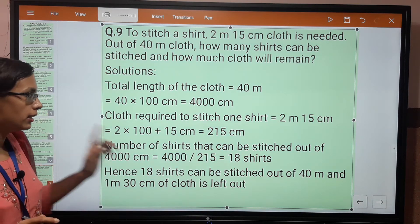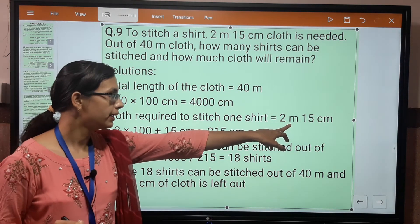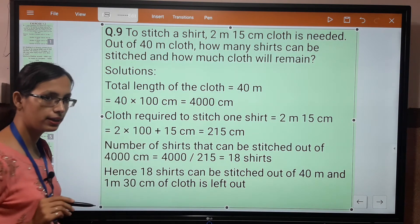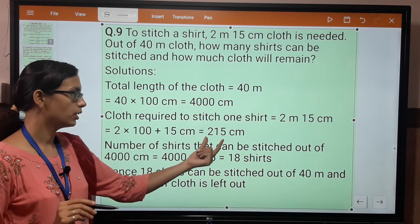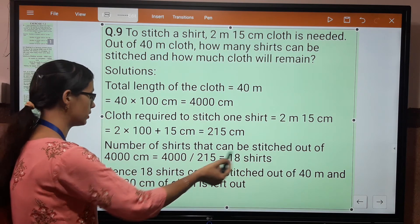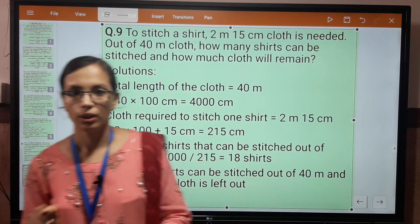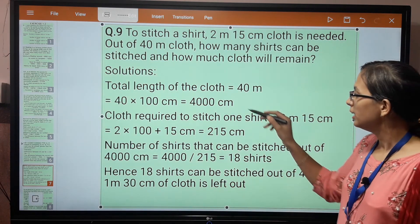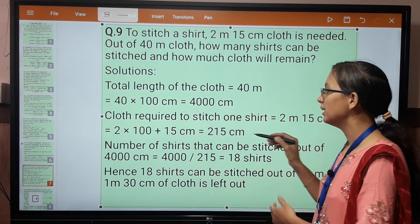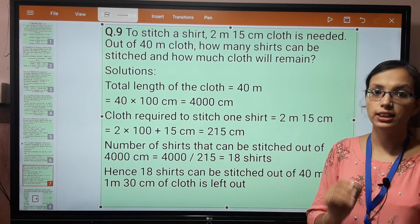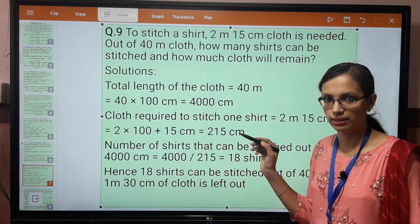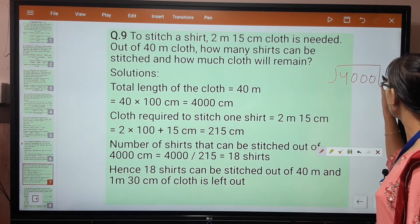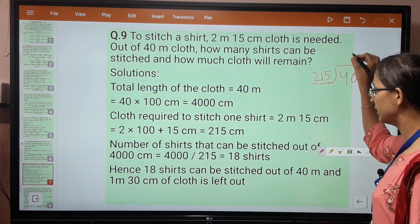Cloth required to stitch one shirt is 2 meter 15 cm. Converting to cm: 2 times 100 equals 200, plus 15 equals 215 cm. Number of shirts that can be stitched out of 4000 cm - total cloth is 4000 cm, one shirt needs 215 cm. We divide 4000 by 215.